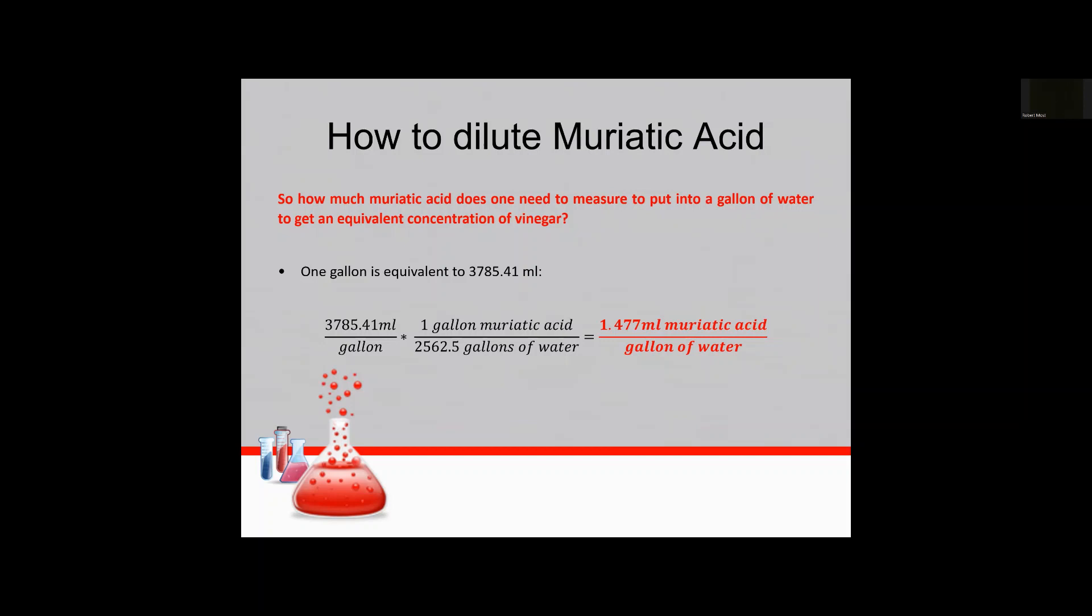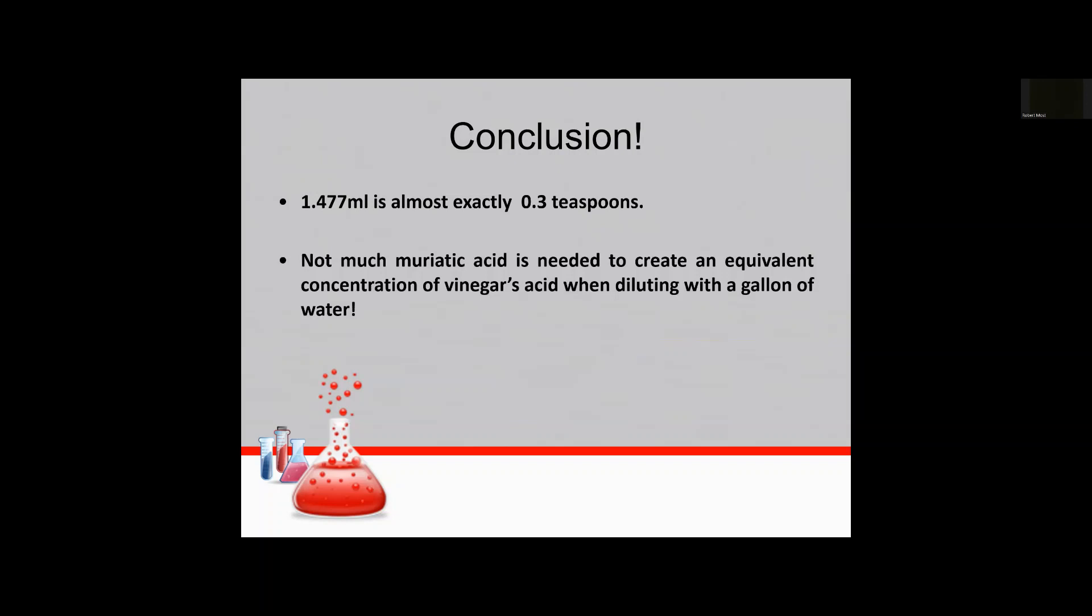And if you're not into the metrics let's go ahead and put this in more kitchen terms if you will. So our conclusion is 1.477 milliliters is almost exactly 0.3 teaspoons. So 0.3 teaspoons of muriatic acid dumped into a gallon of water is all you need to get the equivalent hydrogen ion concentration as a standard gallon of vinegar that you get at the store. Not much is needed.